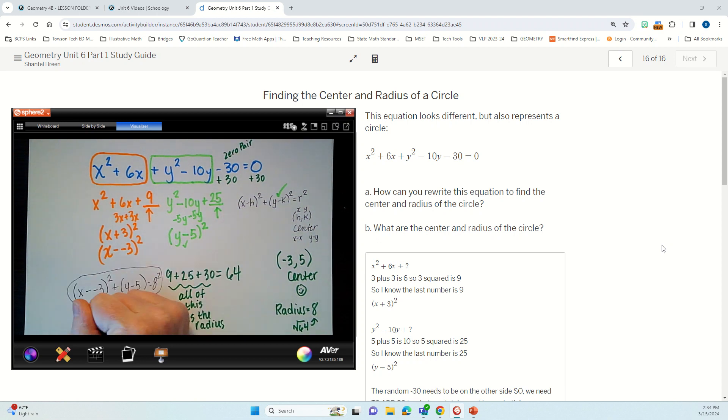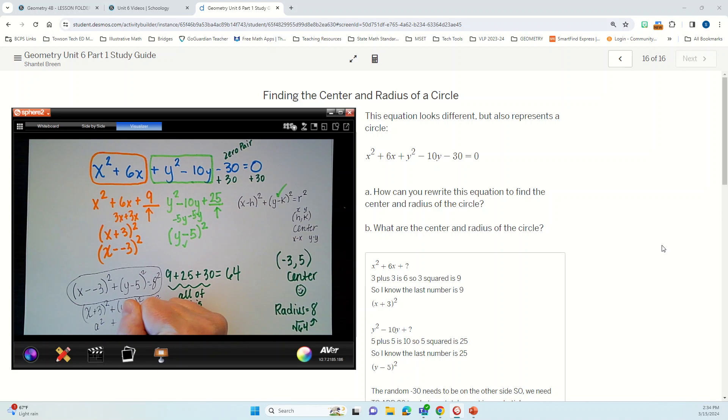And if you don't want to do that, you could say x plus 3. But that's why the point is negative. We need it in subtraction form. Oh, I forgot the squared. Okay. A squared plus b squared equals c squared. Pythagorean theorem.